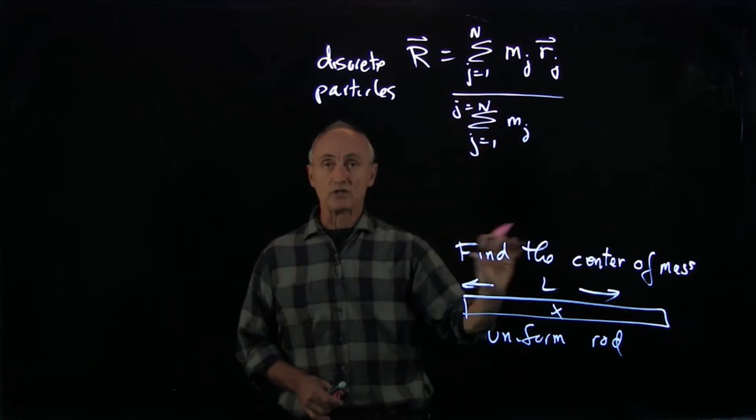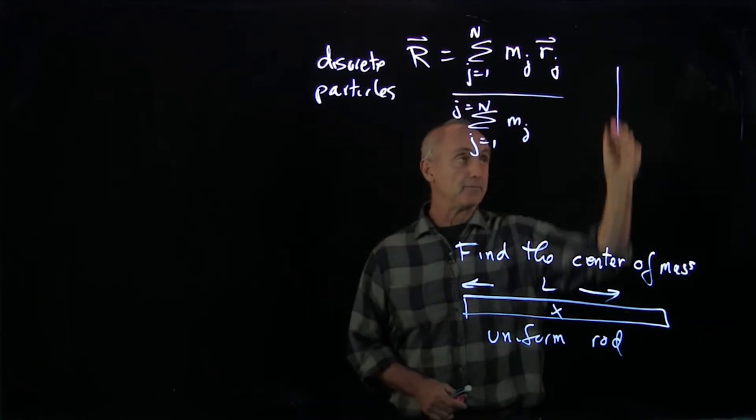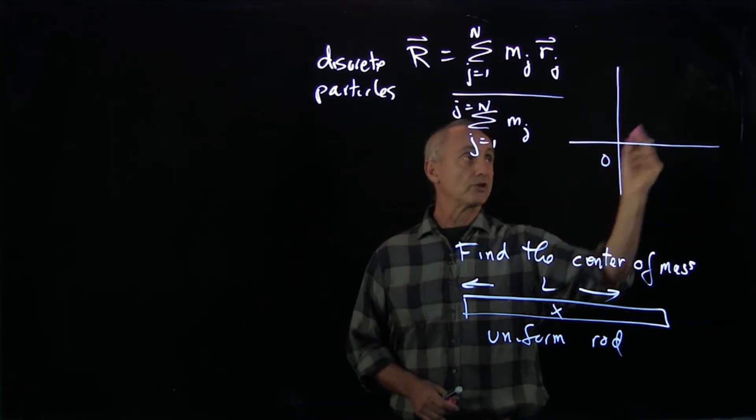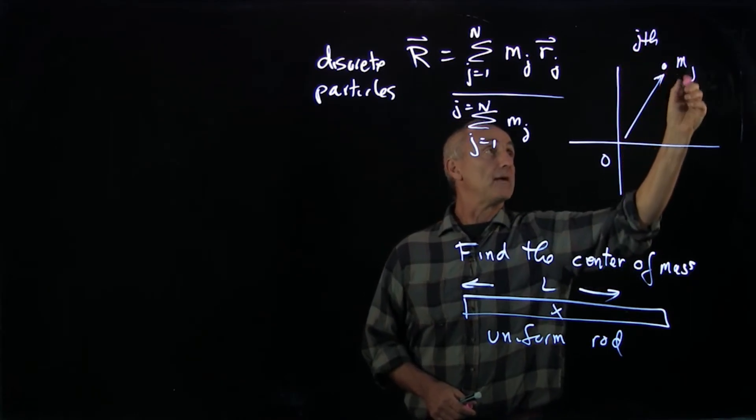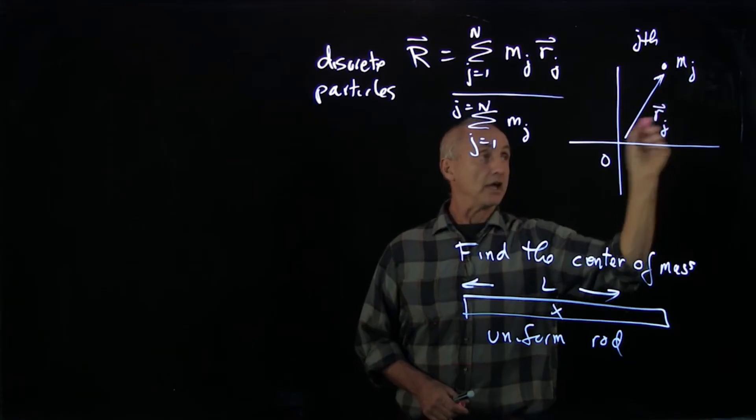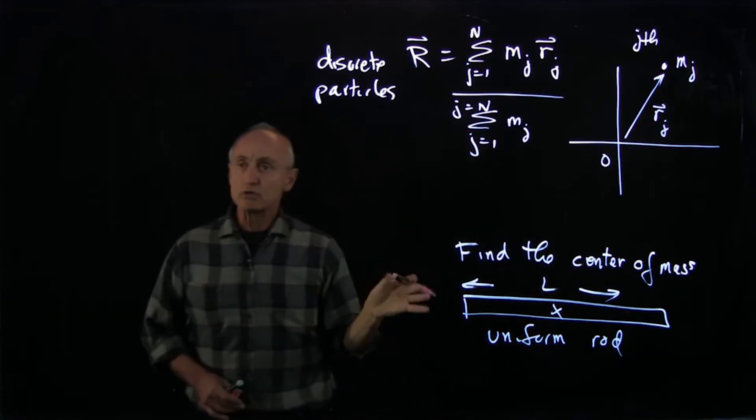How do we translate this equation for a continuous system? Let me just again show that we had chosen an origin. Here was our j-th particle of mass mj and rj. So what we want to do is draw the analogy.